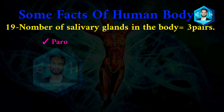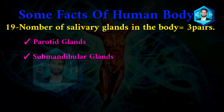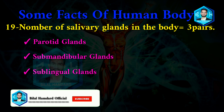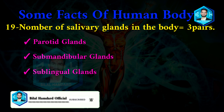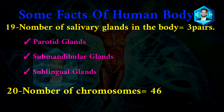The three pairs of salivary glands are: 1) parotid glands, 2) submandibular glands, 3) sublingual glands.